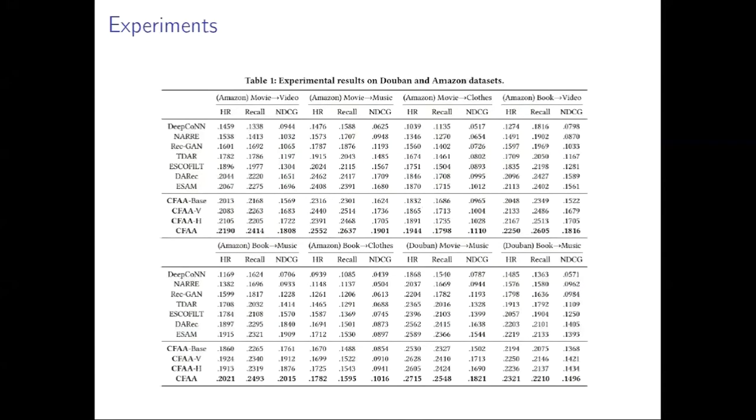Finally, it's the experiments part. We conducted extensive experiments on two popular real-world datasets, Douban and Amazon. First, the Douban dataset has three domains: books, music, and movies. Second, the Amazon dataset has five domains: movie, books, music, media, and CDs. Both datasets have user item ratings and reviews.